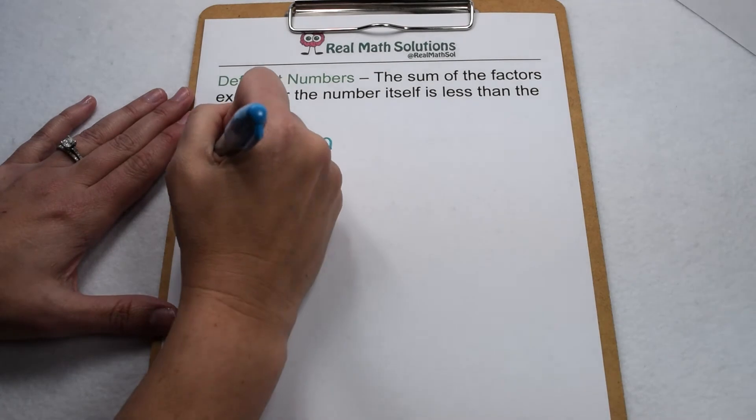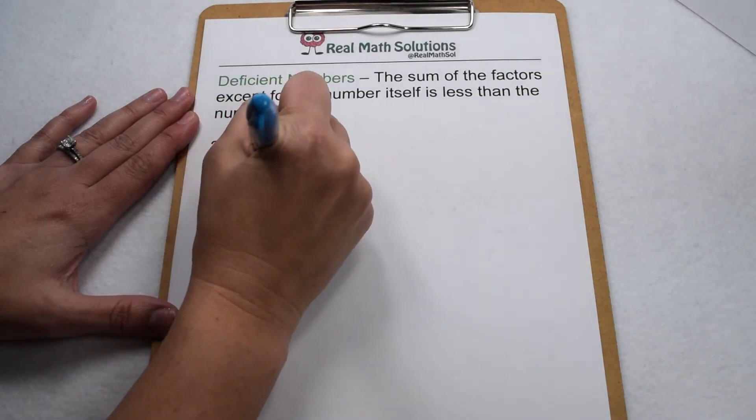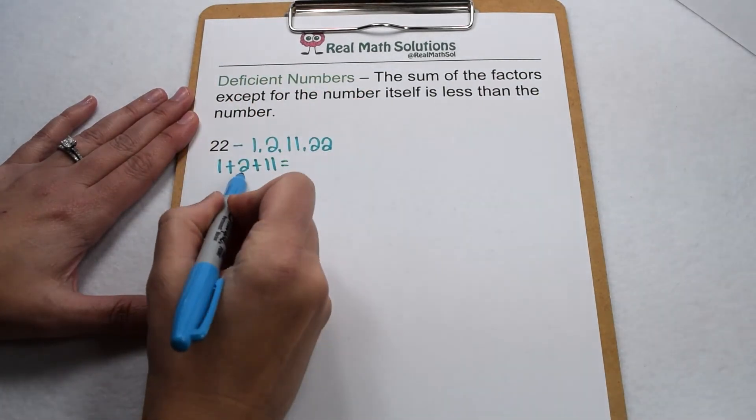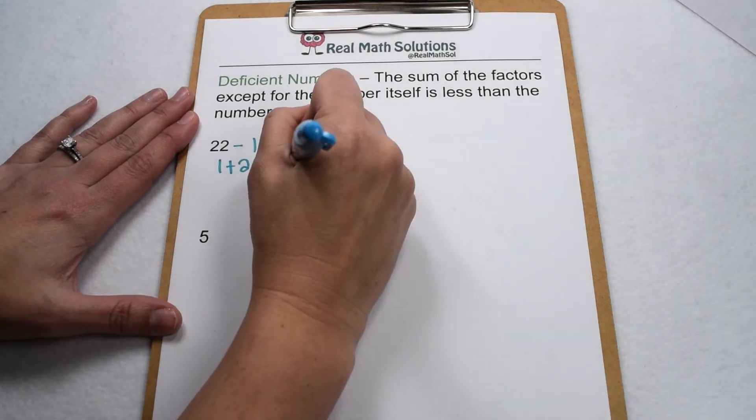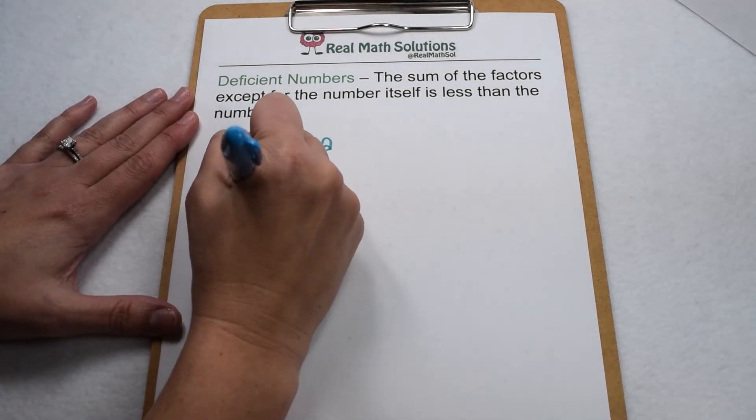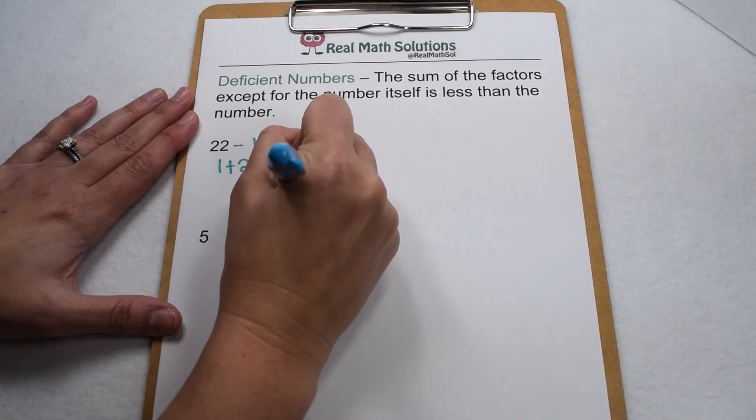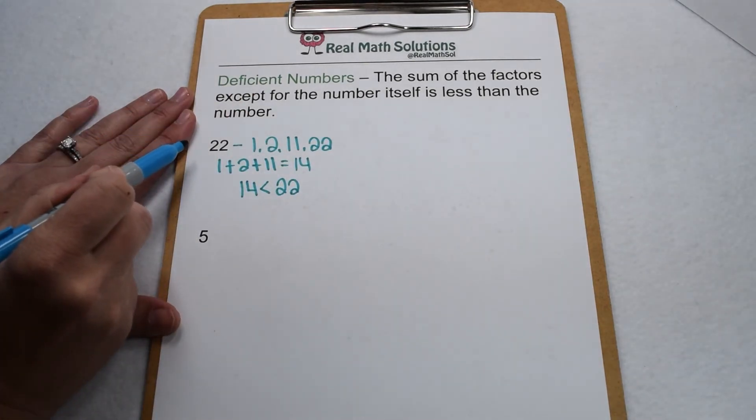So that means we would need to find the sum of 1 plus 2 plus 11. 1 plus 2 is 3. 3 plus 11 is 14. If we compare, 14 is definitely less than 22. So that means 22 is a deficient number.